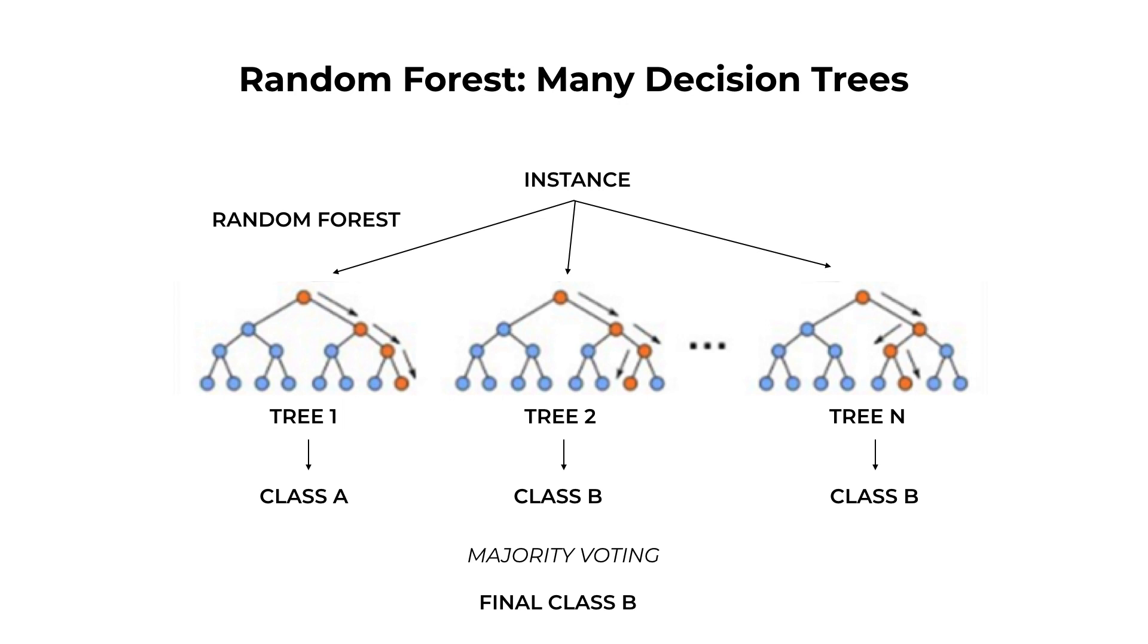Random Forest uses multiple instances of decision trees that are applied to portions of the data one at a time. After the analysis, the tree predictions are analyzed, and majority voting is accepted.